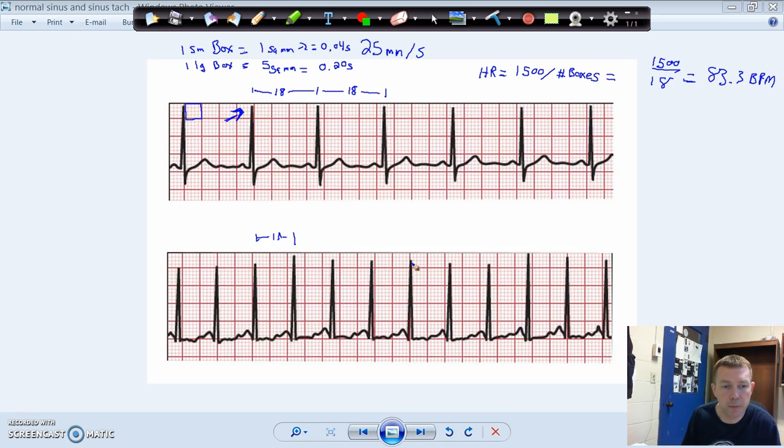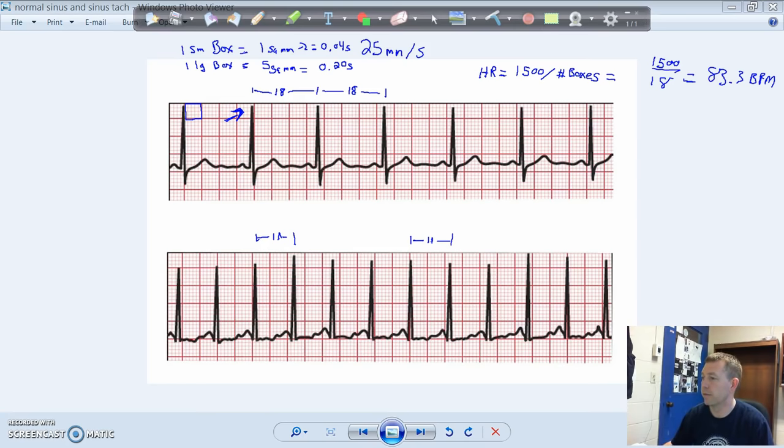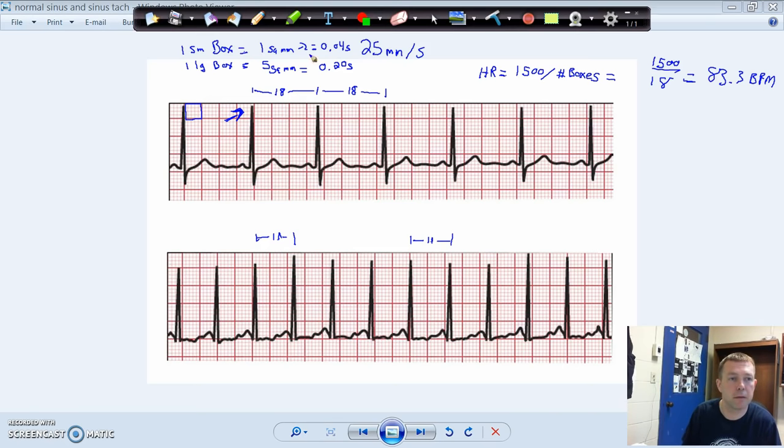You know, this one starts right on a black line, so 5, 10, 11. Yep, between here and here is 11 again. So we know that there are only 11 boxes per cardiac cycle on this one. So 1,500 divided by 11 is going to equal, this is a good one, 1,500 divided by 11 this time is going to equal 136, 136 beats per minute.